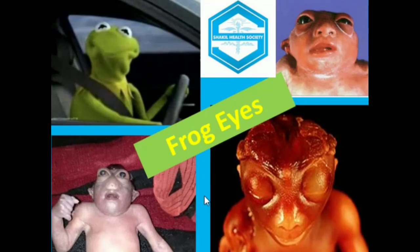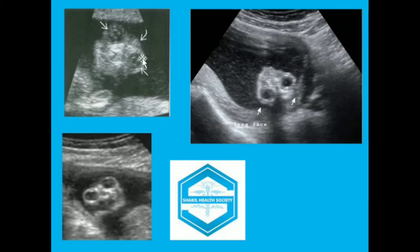These are a few images showing the frog's eyes — the typical sonographic appearance of the anencephalic fetus — with prominent orbits. This image shows prominent orbits with a small volume of brain tissue remaining. This image also shows the anencephalic head with no brain, a typical sonological presentation of anencephaly.